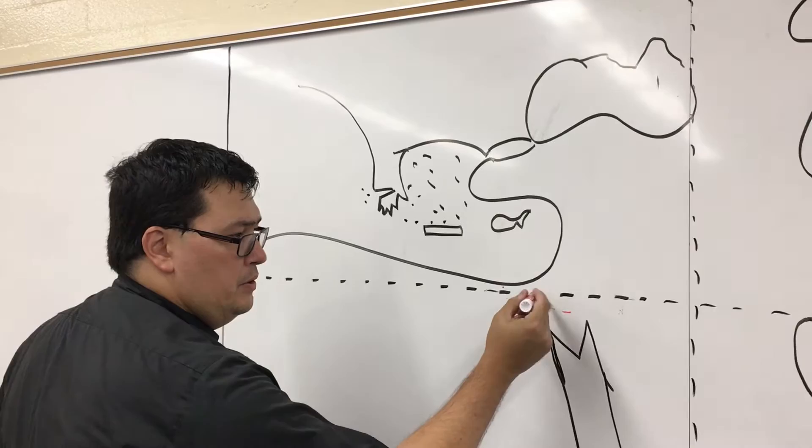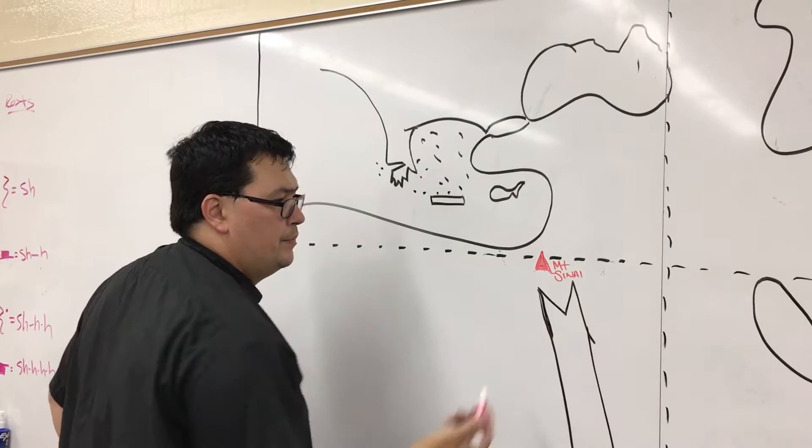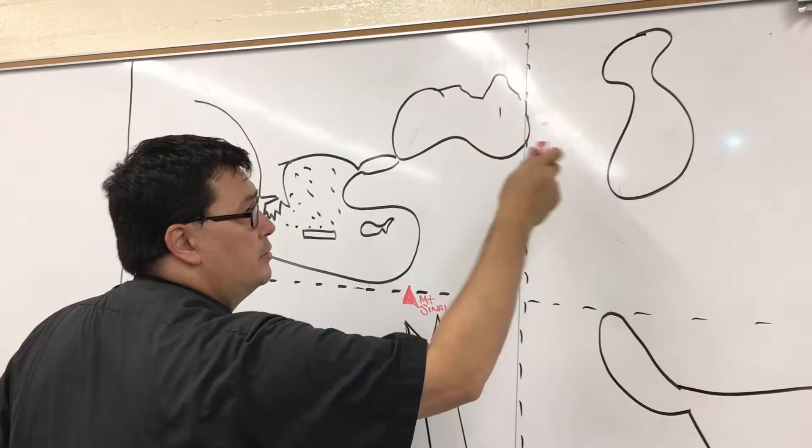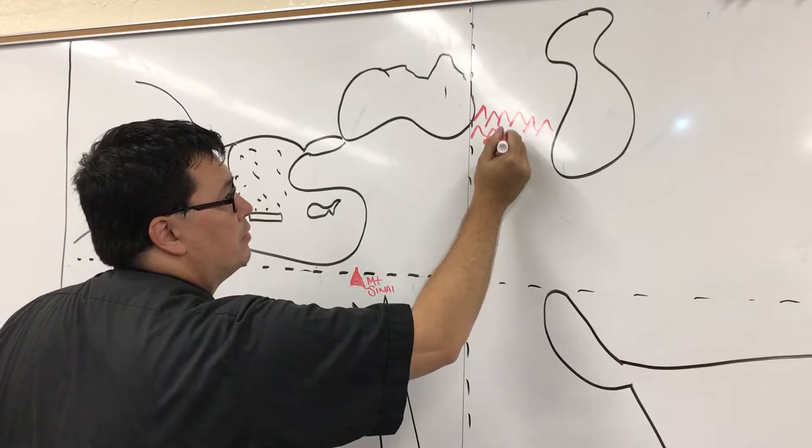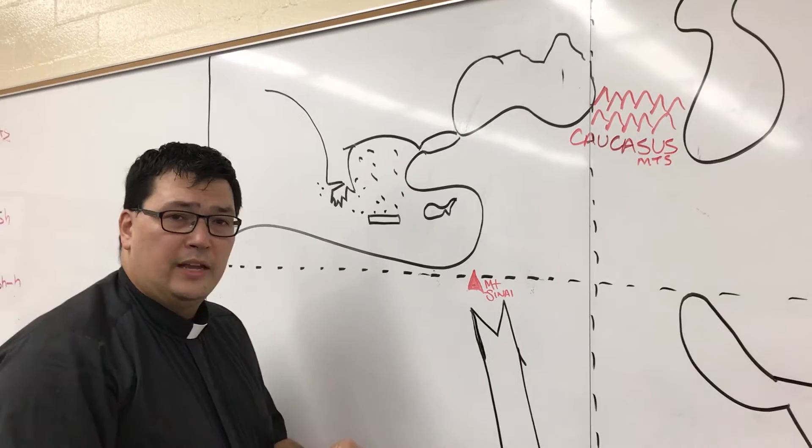But now we need to start labeling things, which is the trickier part. So now we're going to start with mountains. Our first mountain you already know about, it's where Moses received the Ten Commandments. Remember, M is for Moses, so we have Mount Sinai right here in the Sinai Peninsula. Next set of mountains is between the Black Sea and the Caspian Sea. And these are called the Caucasus, C-A-U-C-A-S-U-S.